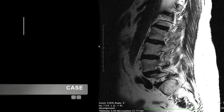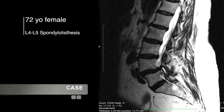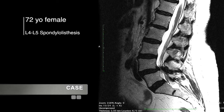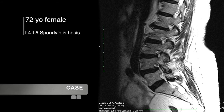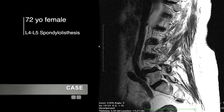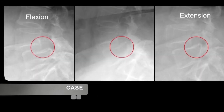This MIS T-Lift case involves a 72-year-old female with a history of back and leg pain with significant L4-5 spondylolisthesis and foraminal narrowing. On upright films, there is an accentuation of the spondylolisthesis. We decided to offer her a minimally invasive T-Lift procedure.